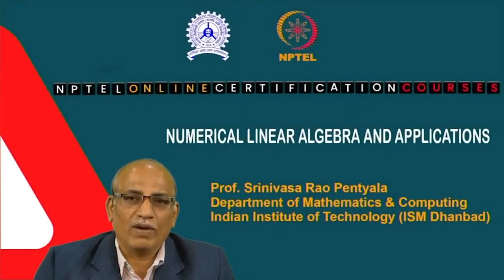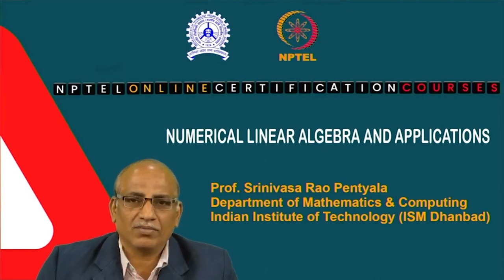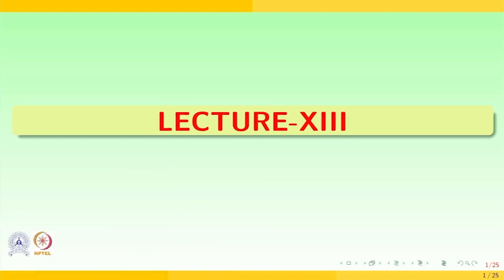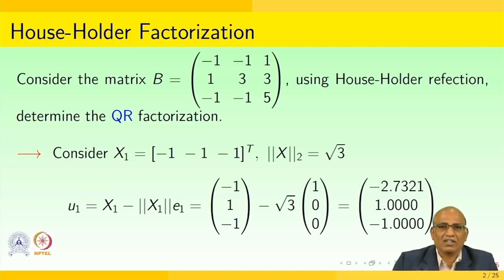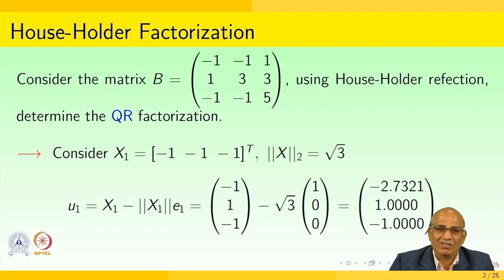Welcome to the course on numerical linear algebra and applications. Today we are going to have the 13th lecture. Before going to the 13th lecture, let us quickly recall what we did in the previous lecture. We spoke about similarity transformation, defective matrices, non-defective matrices, algebraic multiplicity, geometric multiplicity, the advantages of diagonalizing a matrix, and the cases where a matrix can be diagonalizable.